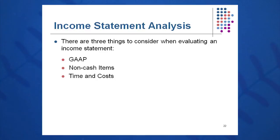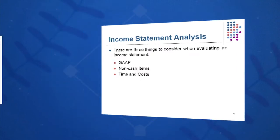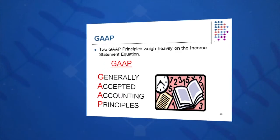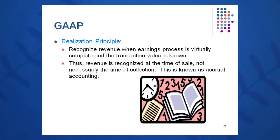When I analyze an income statement, I put on three sets of goggles. First, my GAAP goggles — generally accepted accounting principles. I also look for non-cash items, and I look at time and cost. Two of the more popular GAAP principles are the realization principle, which gets into when do I recognize sales — do I recognize them this month at the end of the month or next month at the beginning of the month?